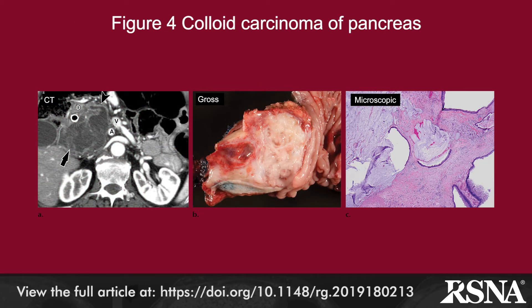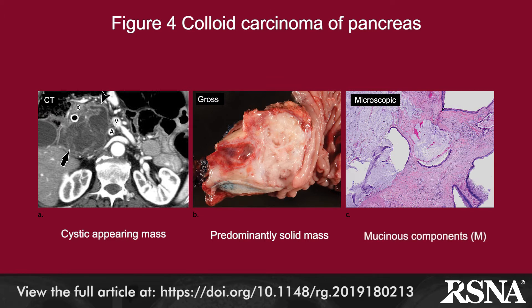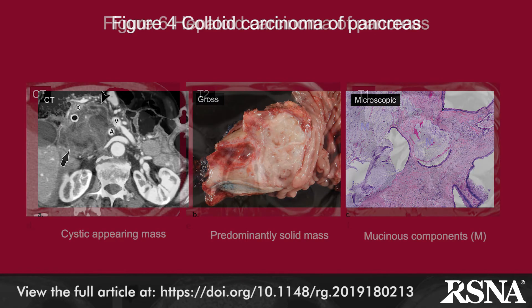Colloid carcinoma accounts for 1 to 3% of exocrine pancreatic malignancies and is usually diagnosed after surgical resection. Trousseau syndrome, or migratory thromboembolism, is associated with this subtype, as the mucin — comprising at least 50% of this tumor by definition — can activate the coagulation cascade. These tumors can be confused with intraductal papillary mucinous neoplasms or mucinous cystic adenocarcinoma due to their attenuation at CT. The mucin accounts for high signal intensity on T2-weighted MR images.